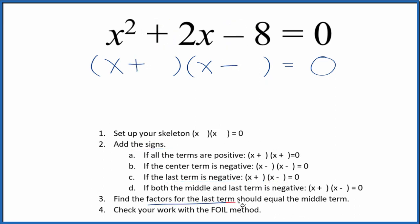Next, I want to find the factors for the last term, this negative 8, and they should add up to equal the middle term, that 2 there. So the factors for 8, it looks like 2 times 4, that's 8, and the difference between 2 and 4, that's 2.